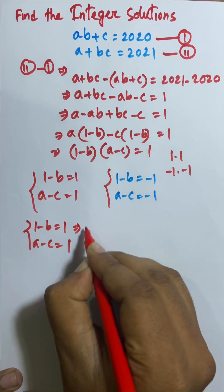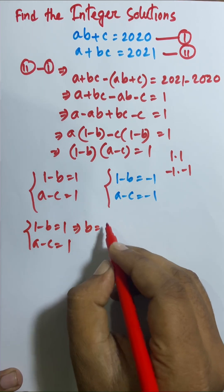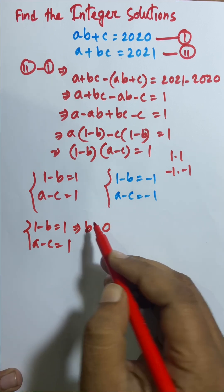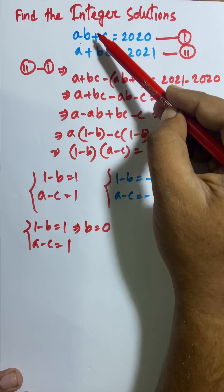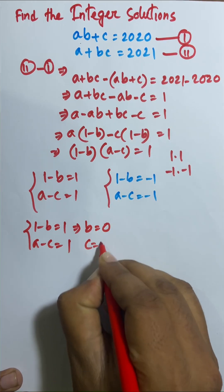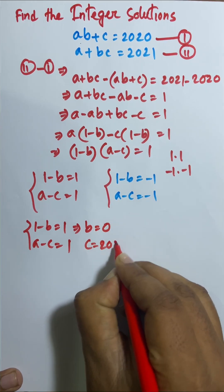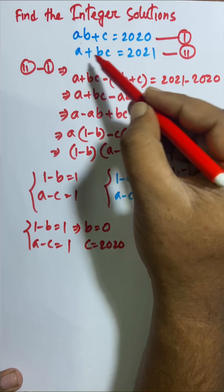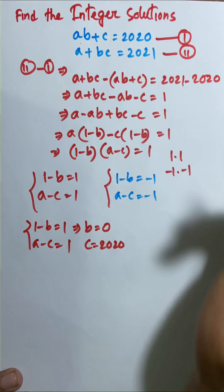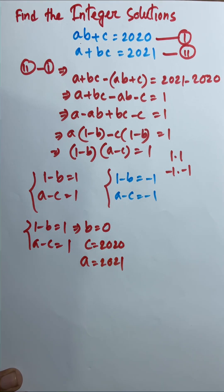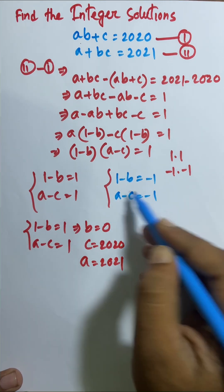First I solve Case 1. From (1 minus b) equals 1, we get b equals 0. From the first equation with b equals 0: a plus ac equals 2020, so a(1 plus c) equals 2020. Using (a minus c) equals 1 and substituting back, a equals 2021 and c equals 0.